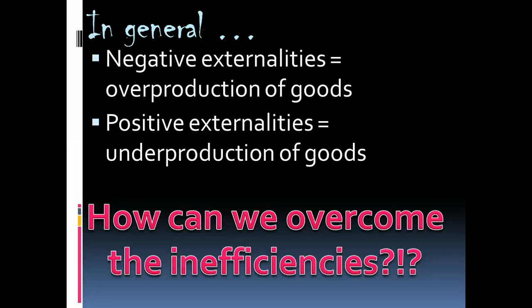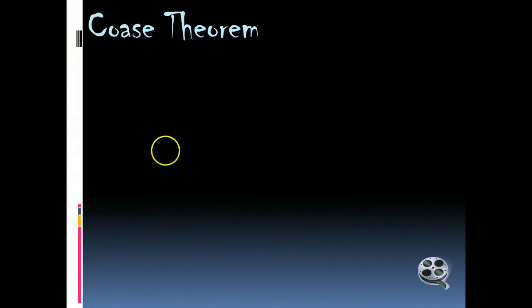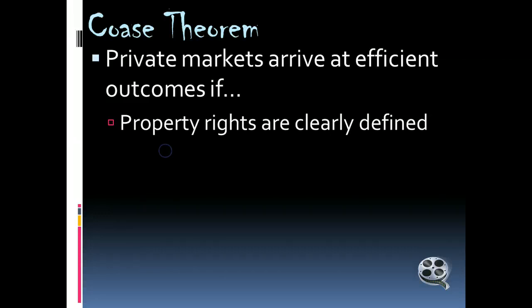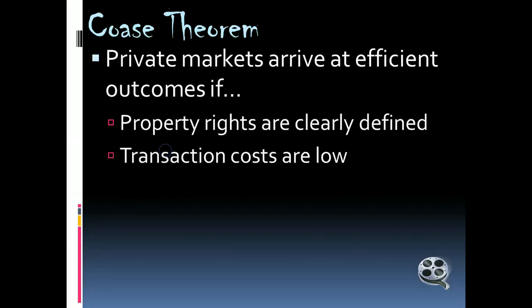So how can we overcome these inefficiencies? One way is what we call the Coase Theorem. The Coase Theorem basically says that private markets can arrive at a socially efficient outcome in all cases, as long as property rights are clearly defined — so we know who has the right to create the externality — and that our transaction costs are low, meaning the cost of paying somebody to either stop doing something negative or encourage them to do something positive is low.